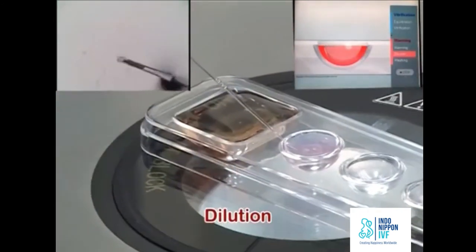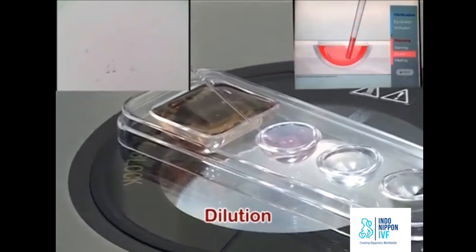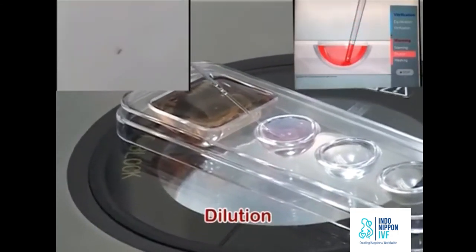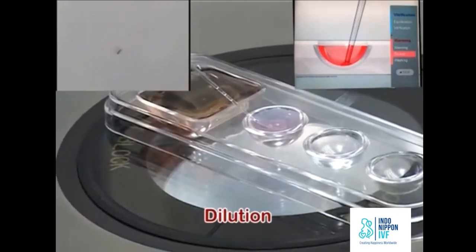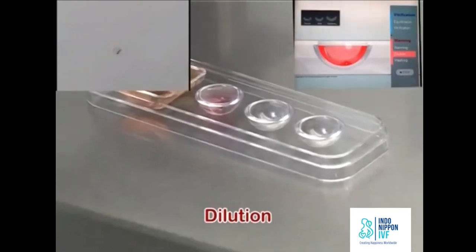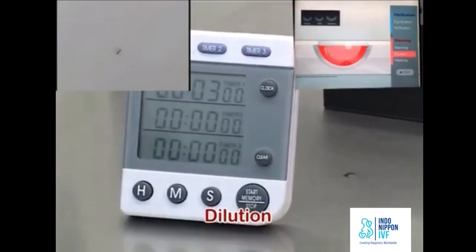Transfer TS to the bottom center of DS and gently put the oocyte at the bottom of TS layer in DS well. This is for the most gradual displacement from TS to DS. Wait for 3 minutes.